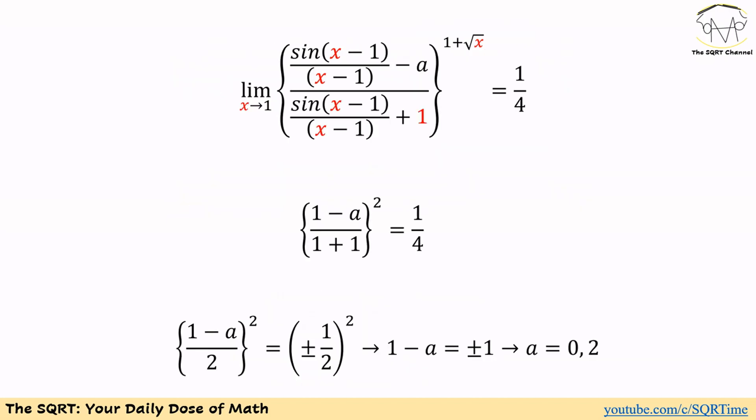Now let's find the limit. The limit of sine of (x minus 1) over (x minus 1) as x approaches 1 is 1. So the numerator gives (1 minus a) over (1 plus 1), which is (1 minus a) over 2. The exponent becomes 1 plus square root of 1, which equals 2. So the equation is (1 minus a) over 2, all to the power of 2, equal to 1 over 4. Writing 1 over 4 as (±1/2) squared, we get (1 minus a) over 2 = ±1/2, so 1 minus a = ±1, giving a = 0 or a = 2. Both values are valid.